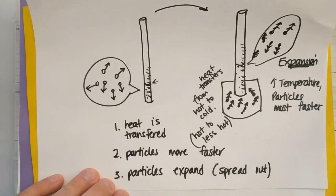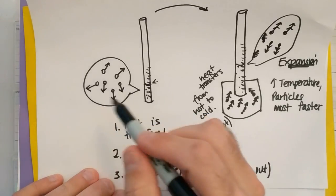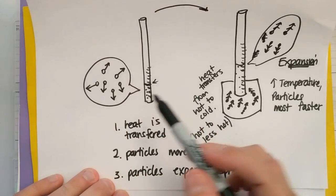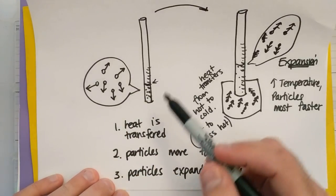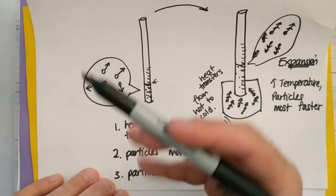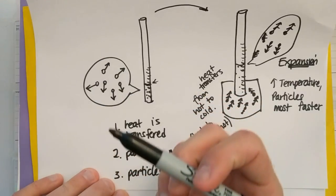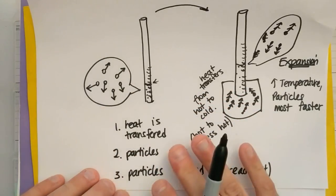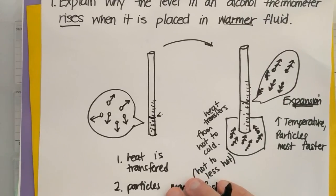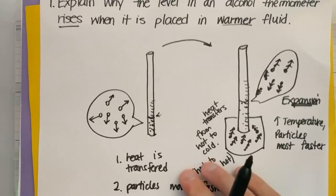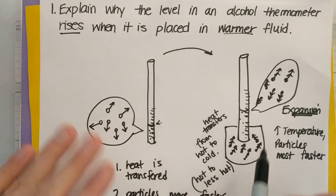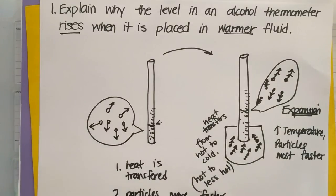The other question says what happens if you put the particles in contact with something that's colder or less warm? The particles will move slower and they'll contract or get closer together. So if you see a question about what happens inside a thermometer, make sure you're able to explain it using images and diagrams like this.